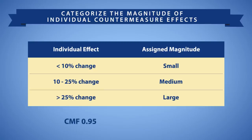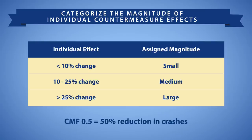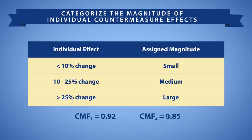Use the table to categorize the magnitude of effect for each individual countermeasure. For example, a CMF of 0.95 represents a 5% reduction in crashes, and you would classify the magnitude as small. A CMF of 0.5 represents a 50% reduction, and you would classify the magnitude as large. How would you classify the magnitude of individual countermeasure effects if the CMF for the first countermeasure is 0.92 and the CMF for the second is 0.85? The classification would be small and medium, respectively.